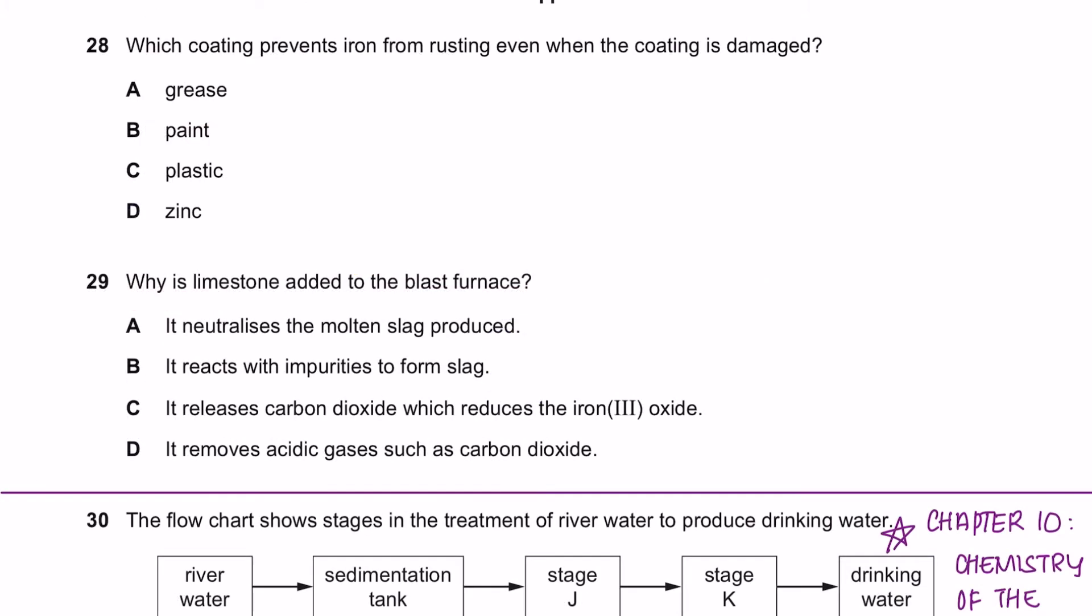Question 28. Which coating prevents iron from rusting even when the coating is damaged? In your syllabus, you will learn a few rust prevention methods whereby rust can be prevented by coating iron with a barrier like paint or grease or even plastic. But the problem with this is that if the barrier is damaged, then the iron will still end up rusting.